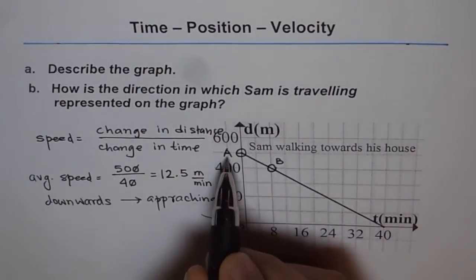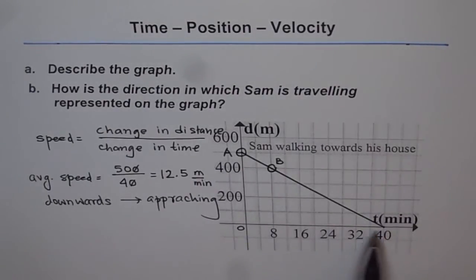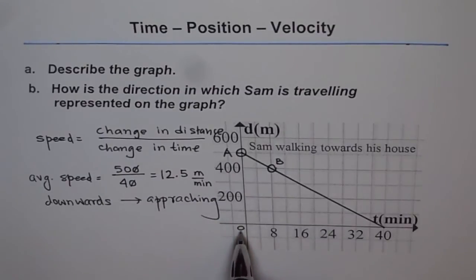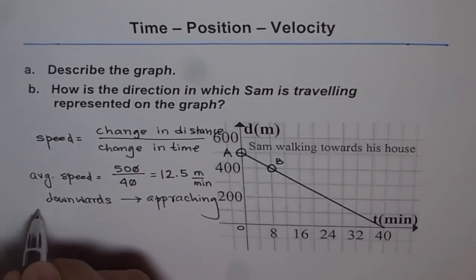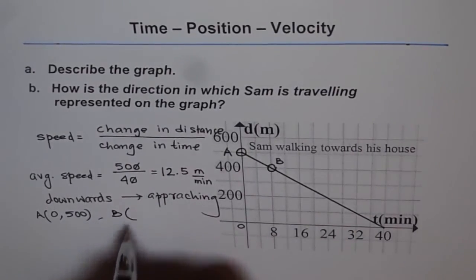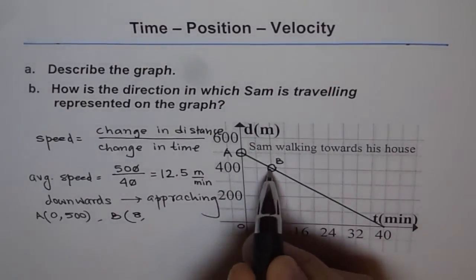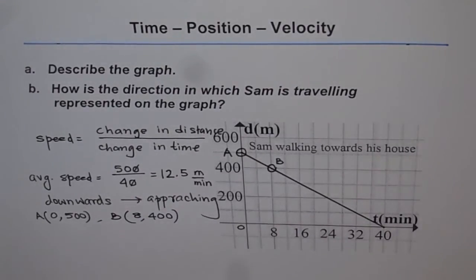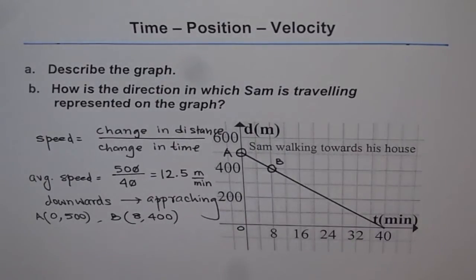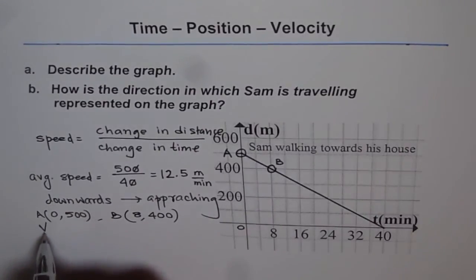What is the position of A? Along the horizontal axis we have time, and along the vertical axis we have distance. So position of A is 0 for time and 500 for distance — let me write point A as (0, 500). And what is the position of B? For B, time is 8, so B is (8, 400). Now we'll find the speed between A and B. I'll use another variable which is called velocity. Velocity gives you both speed and direction, whereas speed is only magnitude — change in distance over change in time where both are taken as positive.